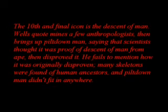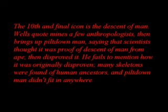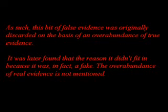The tenth and final icon is the descent of man. Wells quotes a few anthropologists, then brings up Piltdown Man, saying that scientists thought it was proof of the descent of man, then it was disproved. He fails to mention how it was originally disproven. Many skeletons were found of human ancestors, and Piltdown Man didn't fit in anywhere. As such, this bit of false evidence was originally discarded on the basis of an overabundance of real evidence. It was later found that the reason why it didn't fit in is because it was, in fact, a fake. The overabundance of real evidence is never mentioned by Mr. Wells.